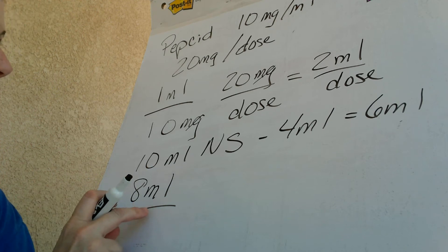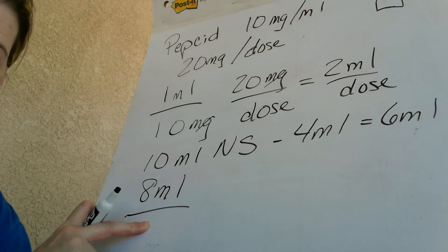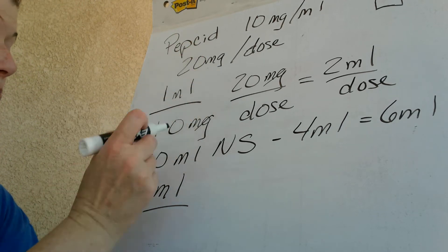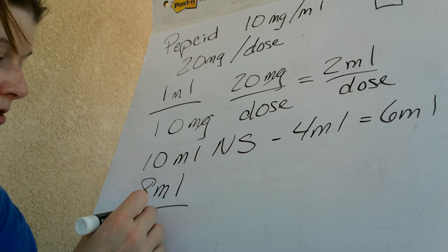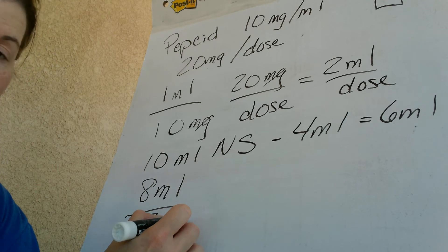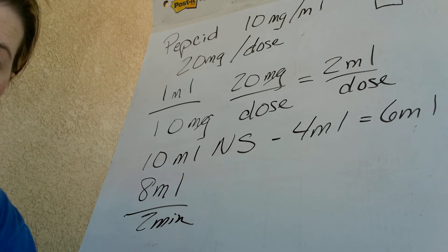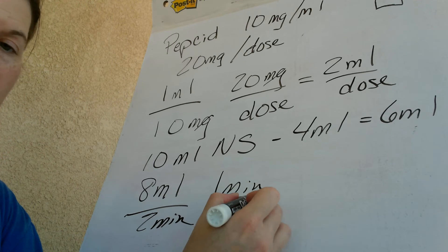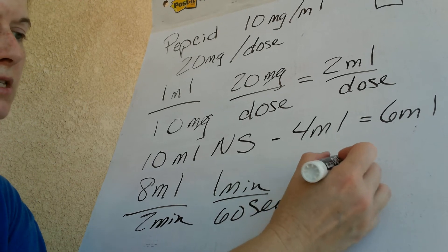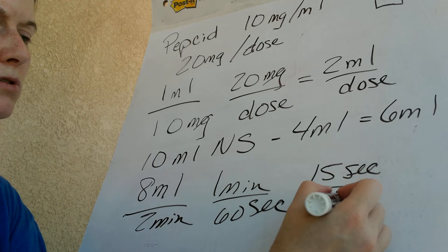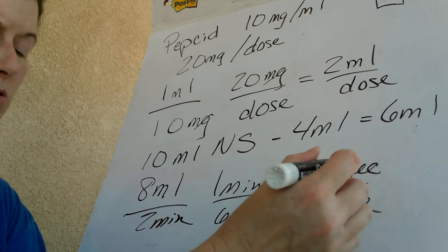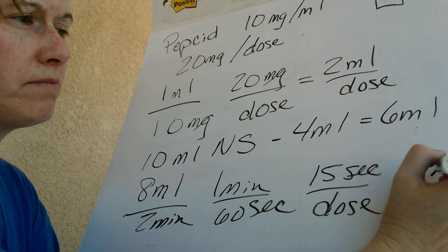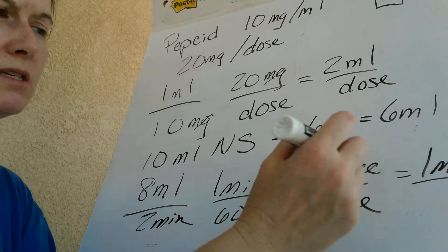I'm going to give this over 2 minutes because the dose is 20 milligrams. So that's 8 mLs over 2 minutes. The math is the same as before: 1 minute equals 60 seconds, then 15-second increments. That gives me 1 mL every 15 seconds.